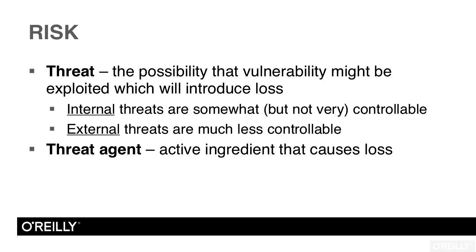The next term is the threat agent. The threat agent is the active ingredient that will actually perform the exploit, causing losses. Our job as a security professional is to avoid those losses — either avoid them completely or minimize them when they do happen. Take a tornado as an example: a tornado is a storm that's going to damage your facility. The threat agent of a tornado is the wind and the physical objects that wind might carry at 100-plus miles an hour, striking your building and causing damage. So the threat agent in this case is the wind and other airborne objects — those are what cause the loss.